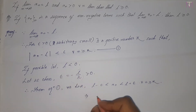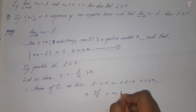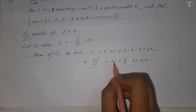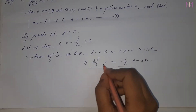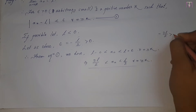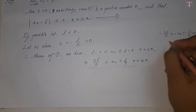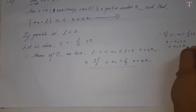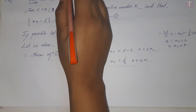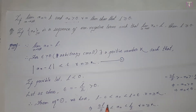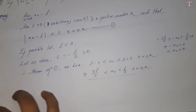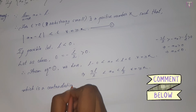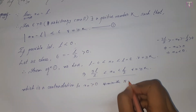Substituting this value of epsilon, we get a result. Taking the relevant part of the inequality, we find that xn is less than 0. This contradicts the given condition that xn is greater than 0 for all n belonging to the natural numbers N.